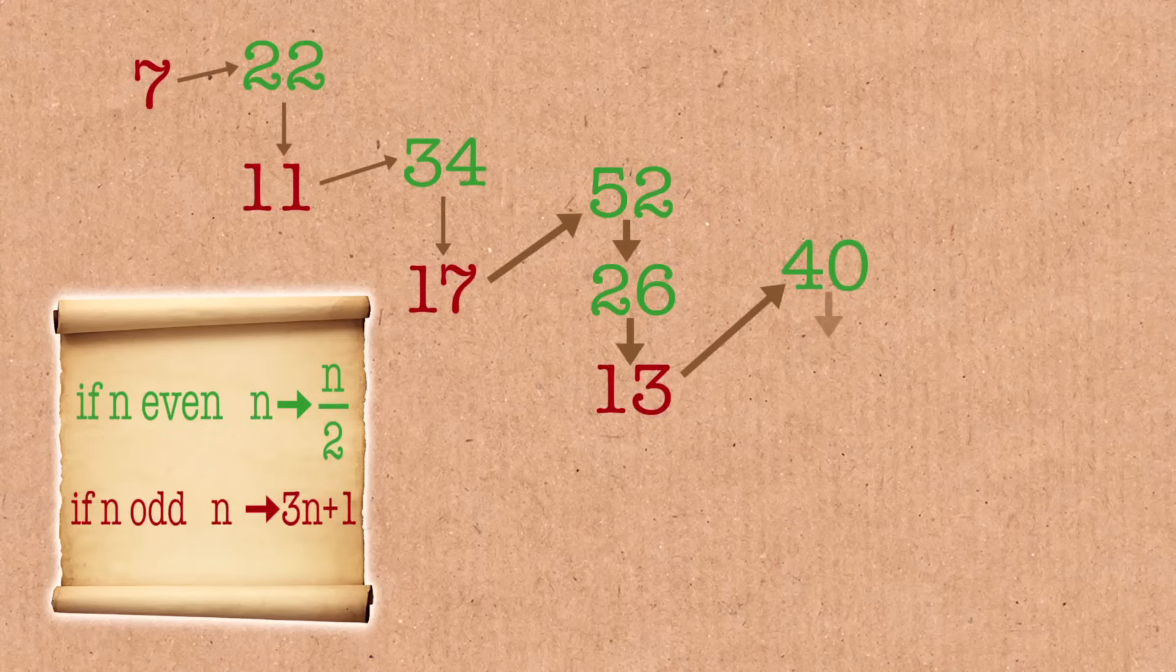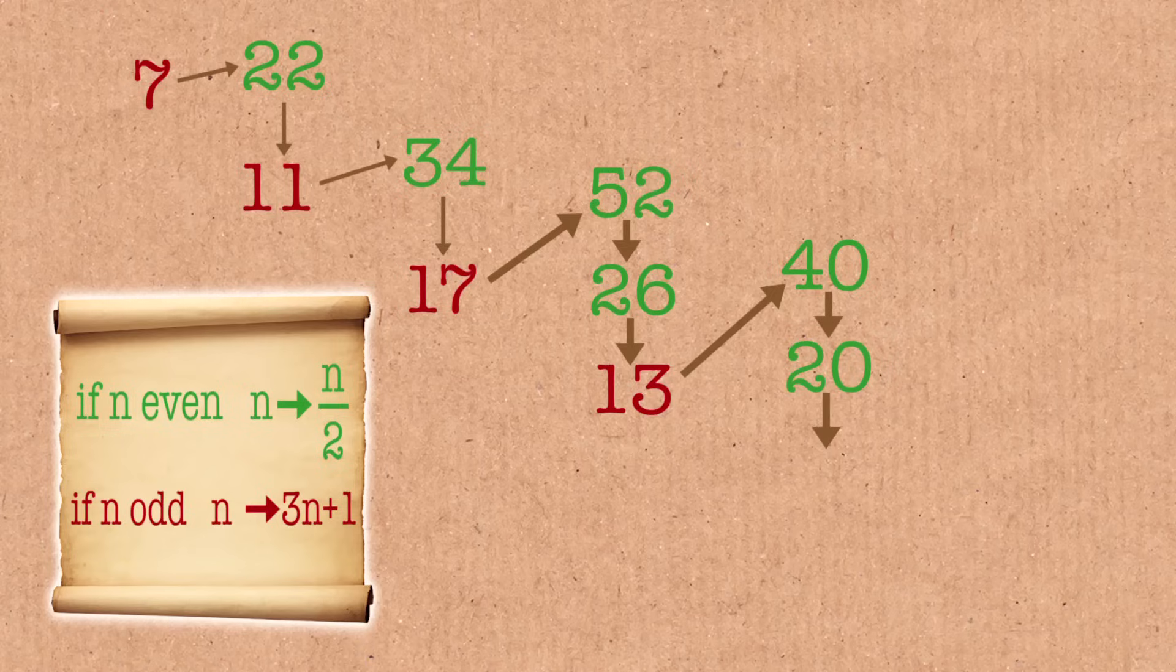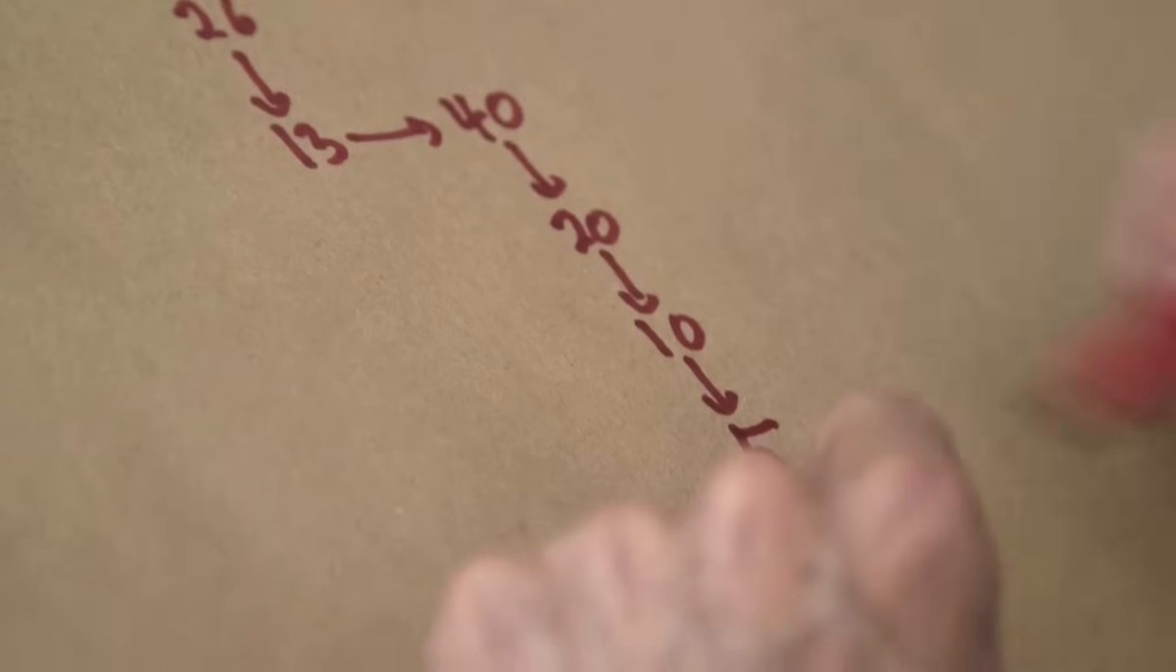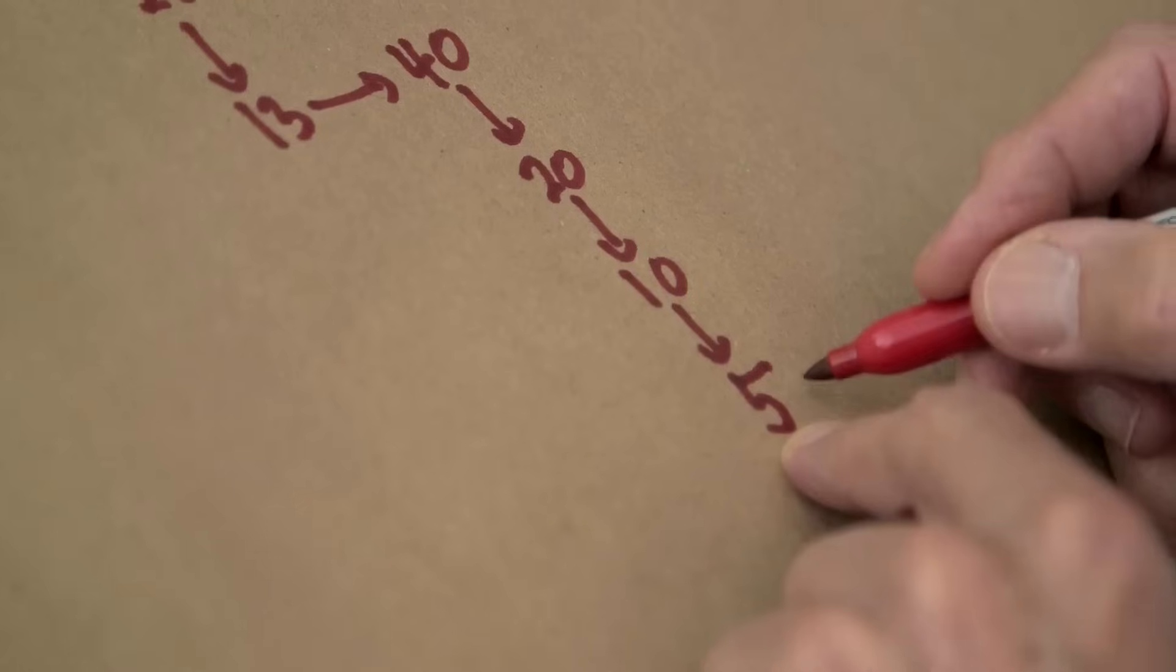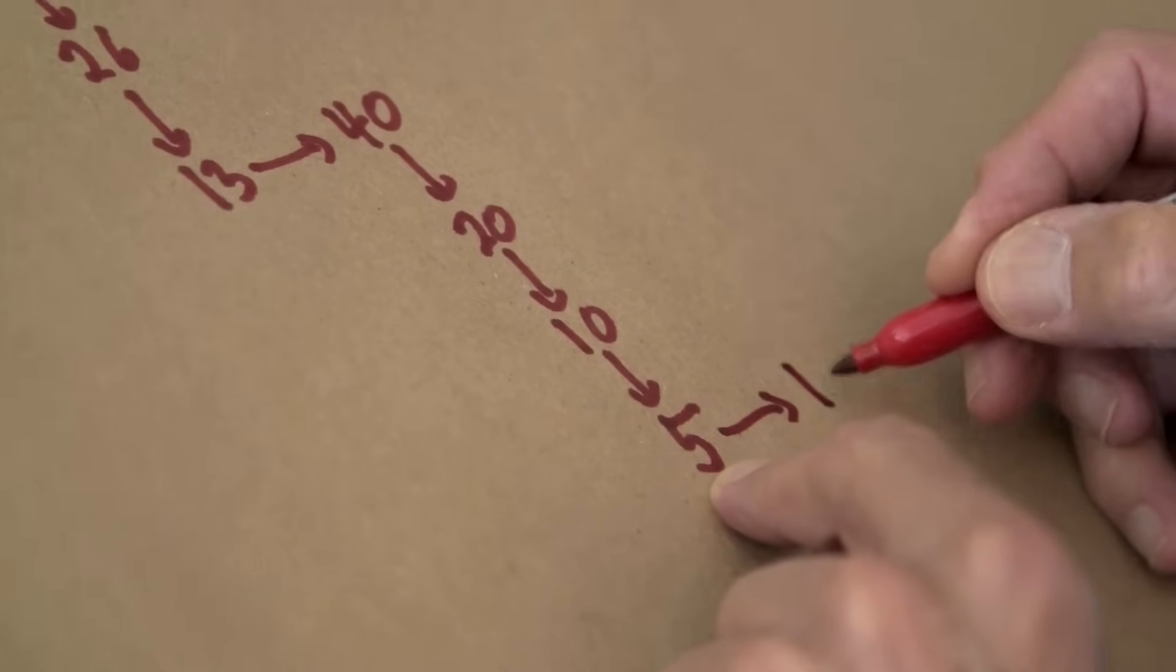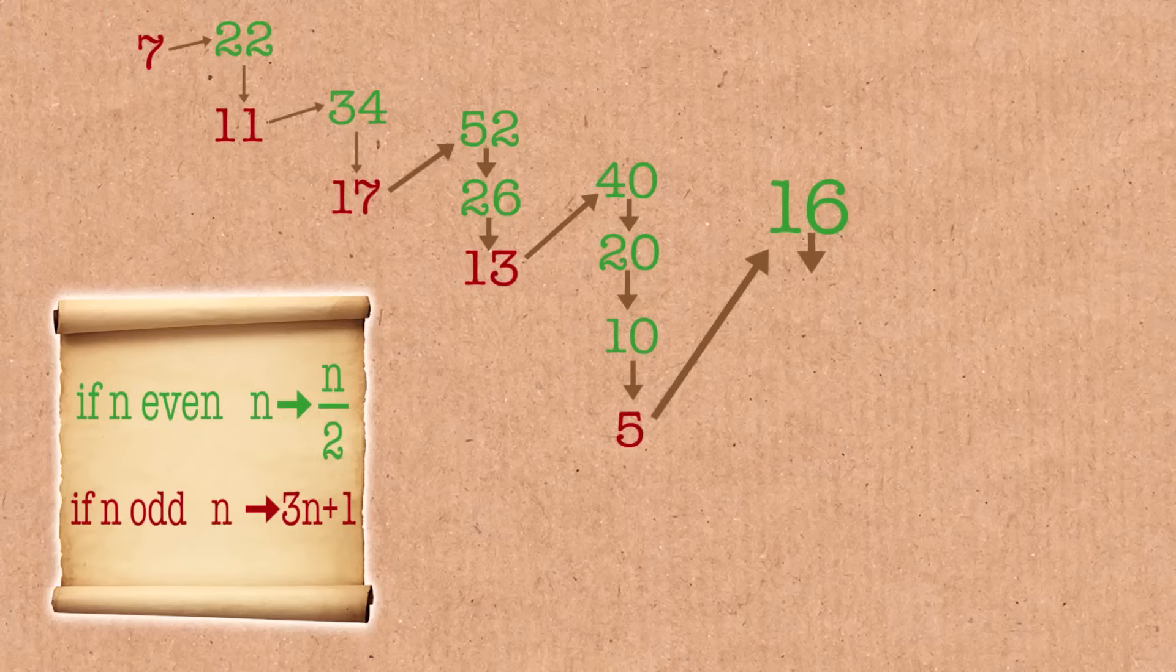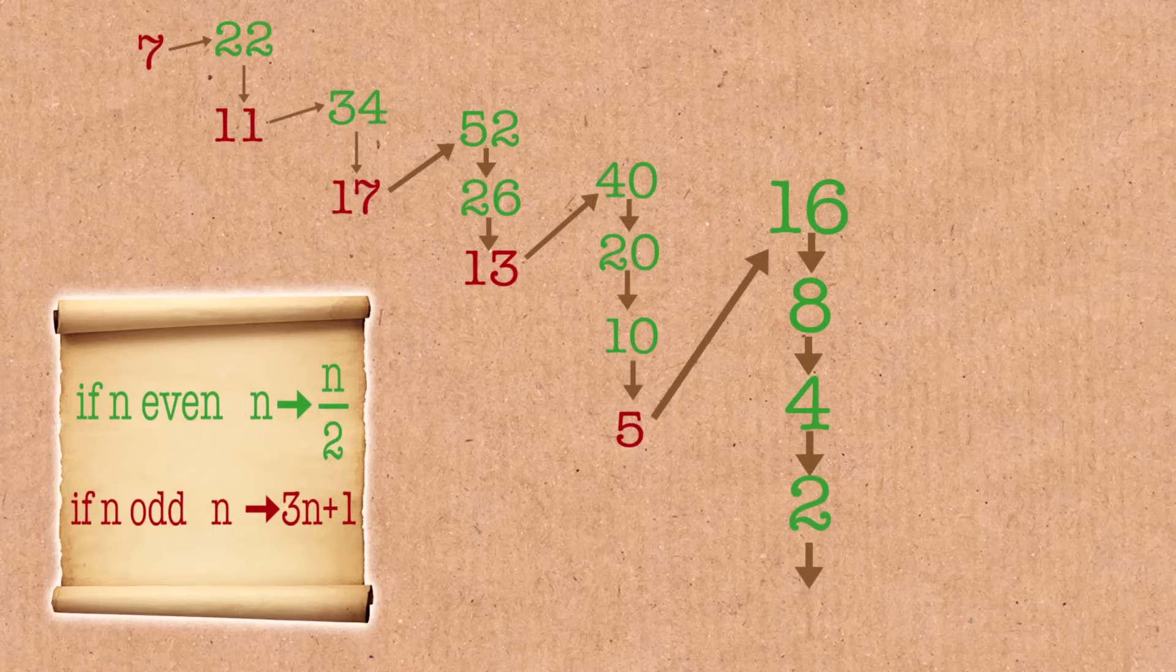40 is even, I divide, I get 20. I divide again, I get 10. I divide again, I get 5. Boy, we fell down a long way. Maybe we're heading for a small number after all. Multiply by 3 and add 1, I get 16. Whoa, 16, very even number. I get 8. I get 4. I get 2, and I get 1.